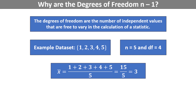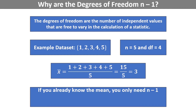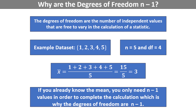The reason the degrees of freedom are 4 is because, if I told you the population mean was 3, you would only need to know 4 of the observations in my data set to complete the calculation. For example, if I told you the mean was 3 and the numbers were 1, 2, 3, 4, and some mystery number, the only mystery number that will lead to a mean of 3 is the number 5. If the mean is known, the 4 remaining values determine the 5th, which is why the degrees of freedom are n-1.